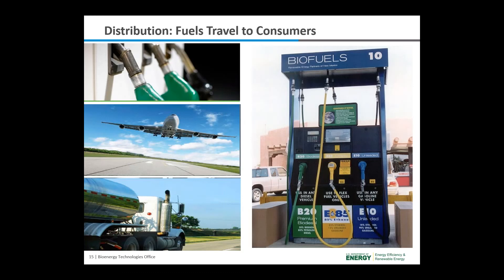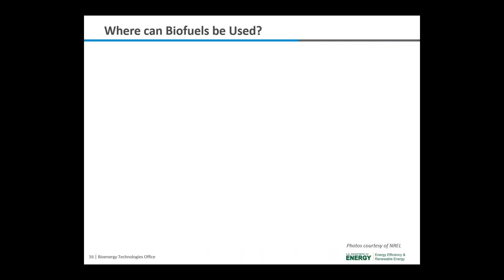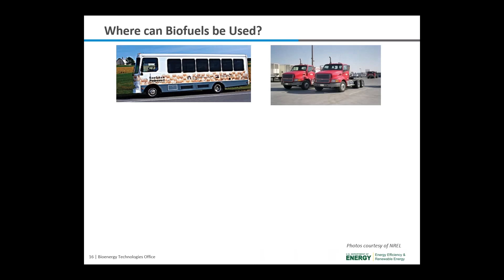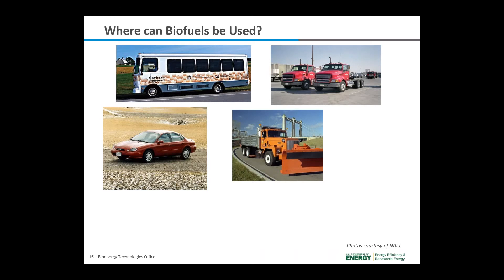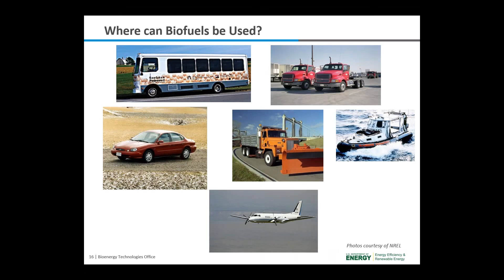After going through the biorefinery, finished products and fuels travel to gas stations, airports, marinas, stores, warehouses, and other locations where consumers can purchase and use the new biomass-derived products. There are a variety of modes of transportation that can use biomass-based fuels, including buses, heavier-duty trucks, cars, snow plows and other large industrial-sized trucks, boats, airplanes, and light-duty pickup trucks.